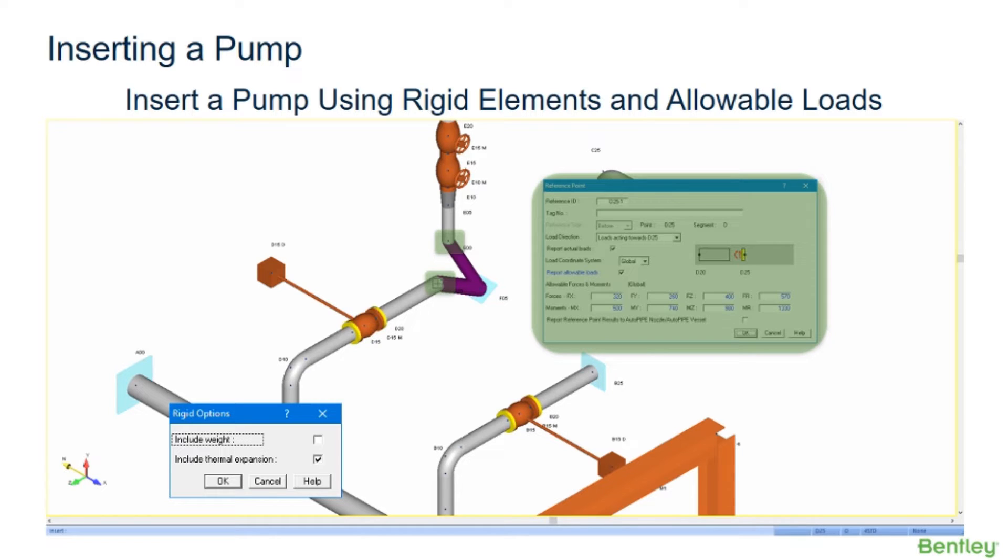The reference data point is a special single point component that allows the user to specify element end results at a point. For example, a run point has a negative and a positive side in which the element end forces and moments have been calculated.